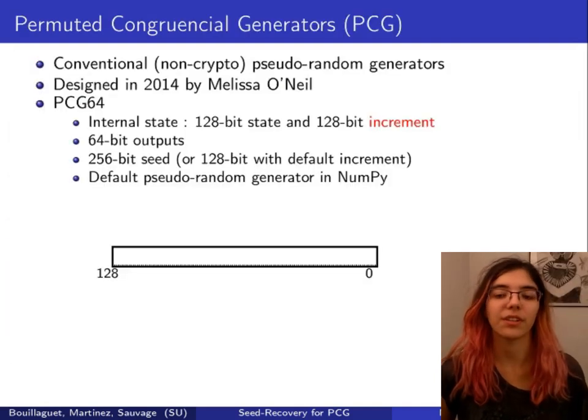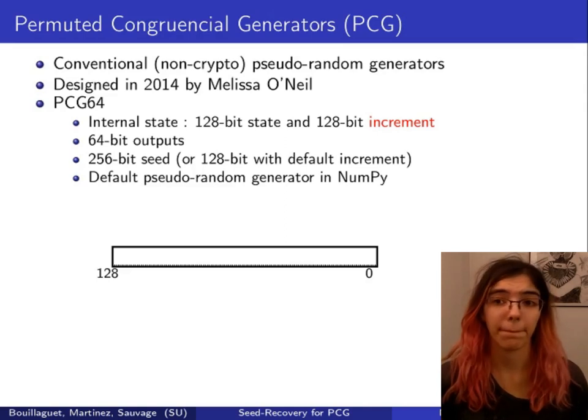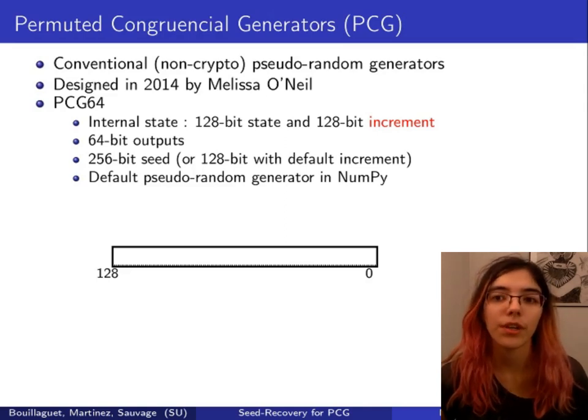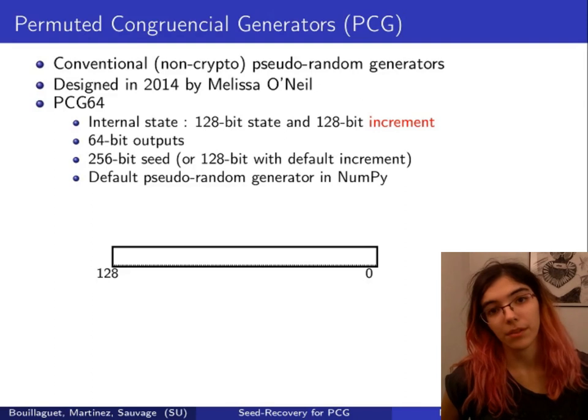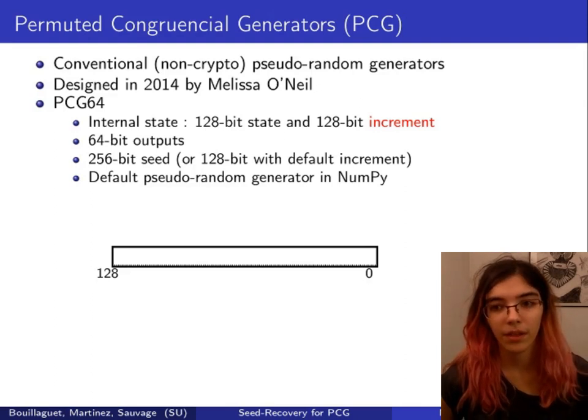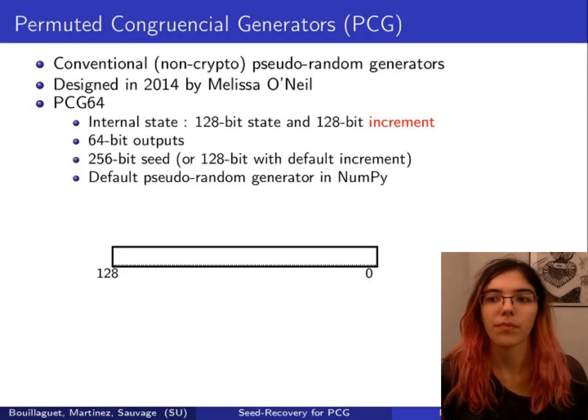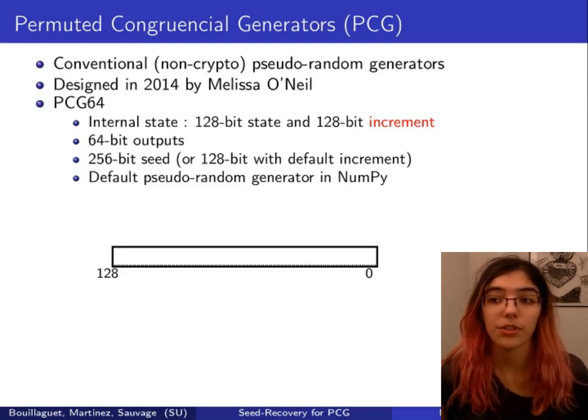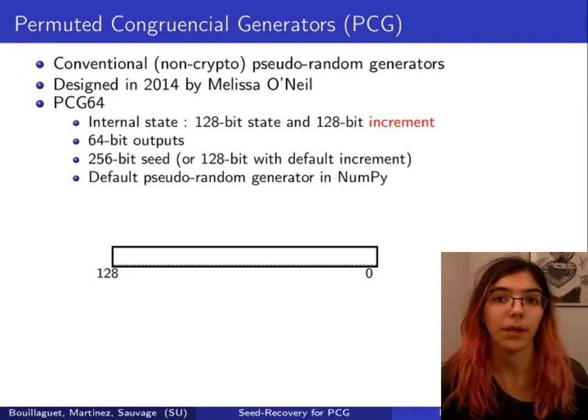PCG has been designed by Melissa O'Neill in 2014. It's widely used. For instance, it's the default generator in Python NumPy package. We studied the presumably most secure version, PCG64, which is precisely the version used in NumPy.